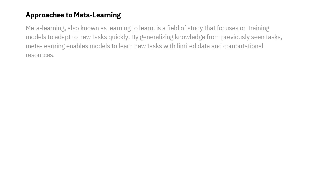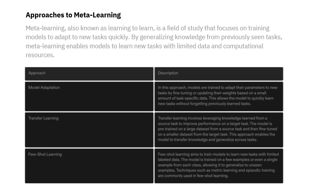Meta-learning, sometimes referred to as learning to learn, is a field of study that focuses on training models to adapt quickly to new tasks. By utilizing existing knowledge, meta-learning allows models to effectively learn new tasks with limited data and computational resources. To get a better understanding of how this process works, let's take a closer look.